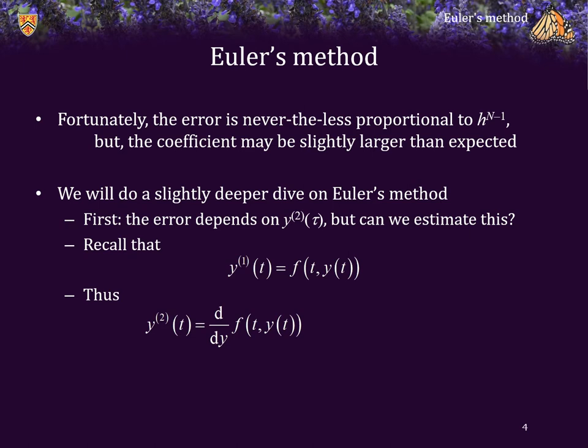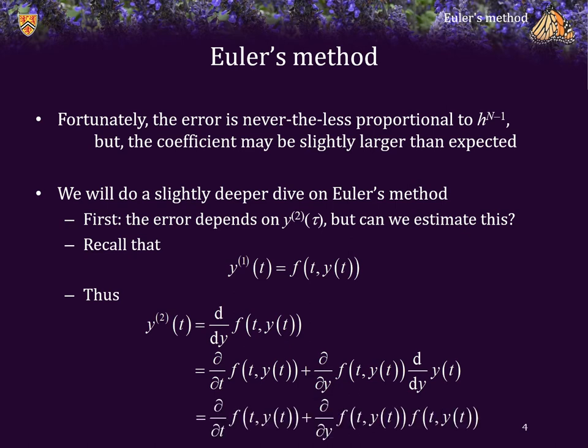Therefore, the second derivative is the total derivative of this bivariate function f. Because it's bivariate, the total derivative is the partial derivative with respect to the first variable, plus the partial derivative with respect to the second variable. But because the second variable y depends on t, we must therefore use the chain rule, and consequently that result must be multiplied by the derivative of y of t. But we have the derivative above — that's just the function f, so we can substitute it in.